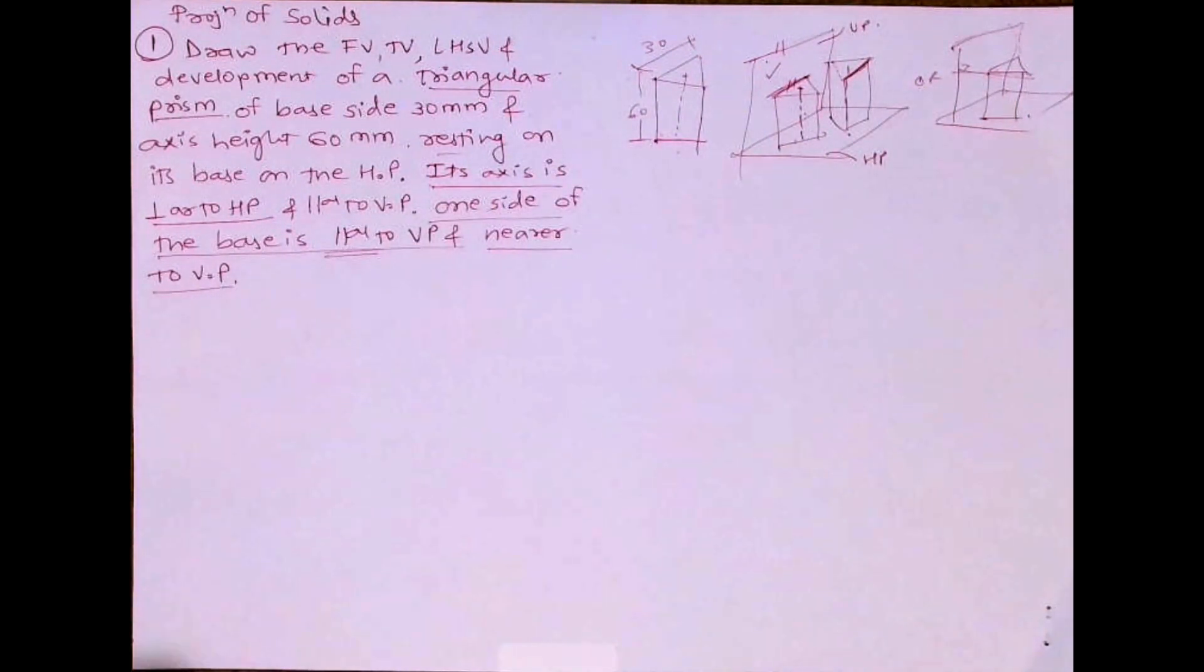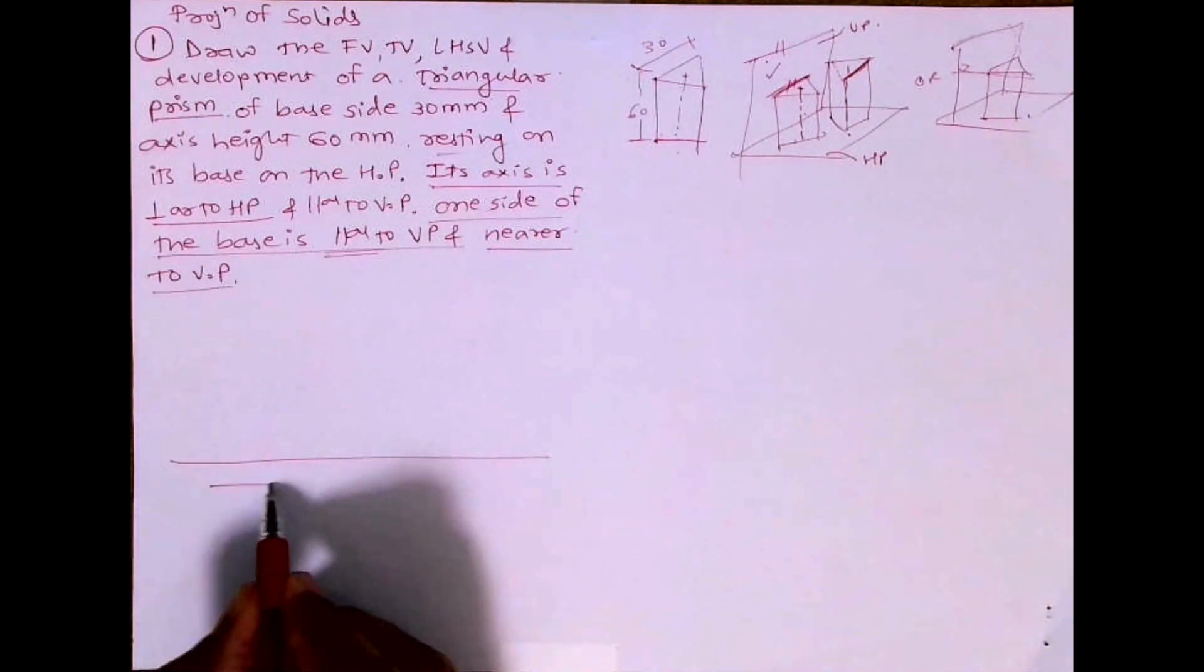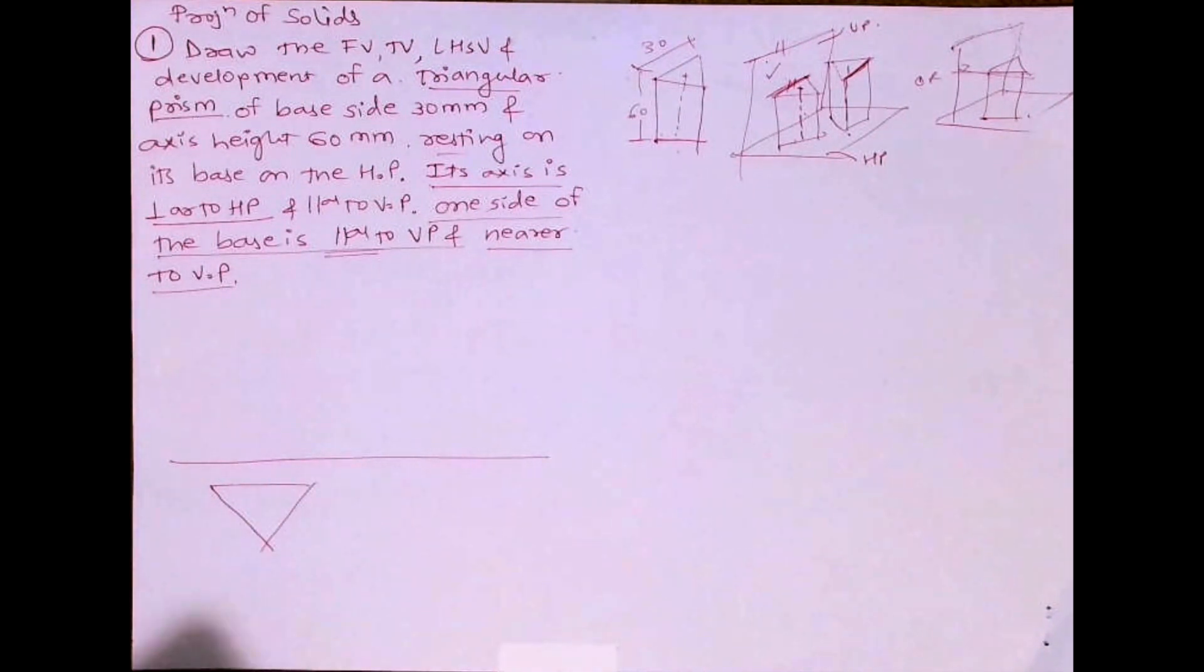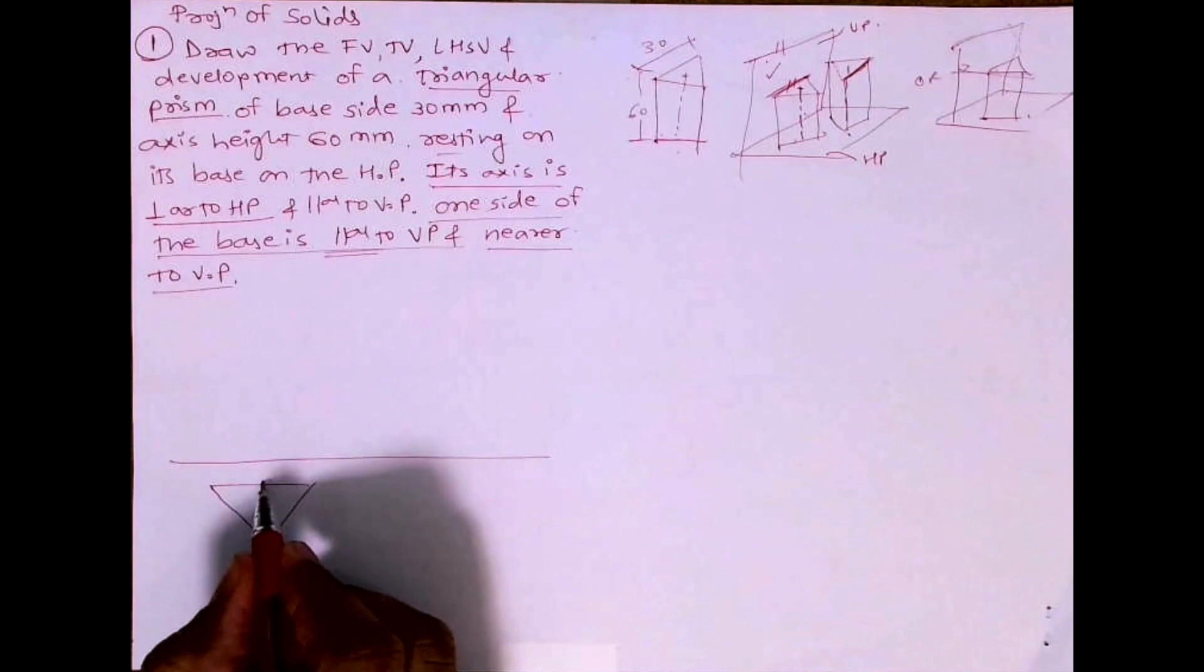So when you will draw, first you will draw XY line. You will draw triangle down. We'll mark midpoint, midpoint join to the opposite corner, we'll get the center point.